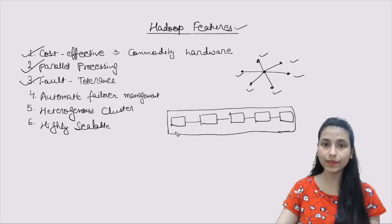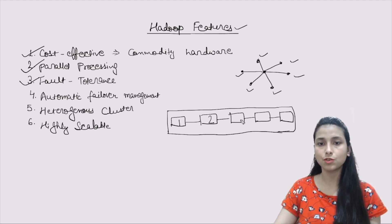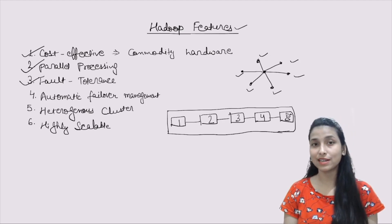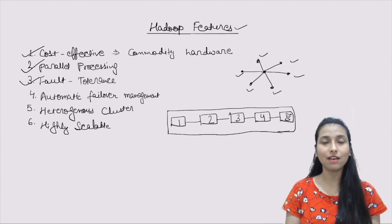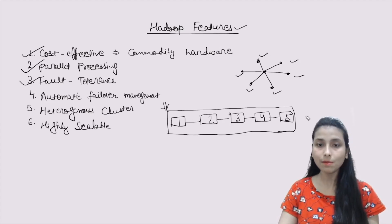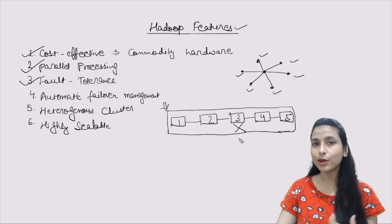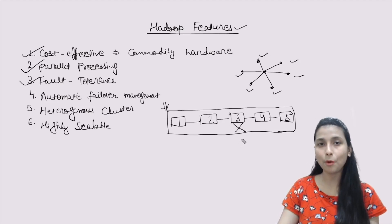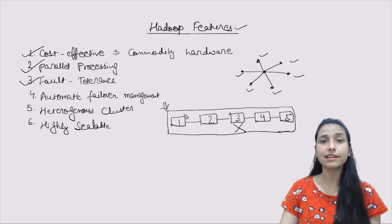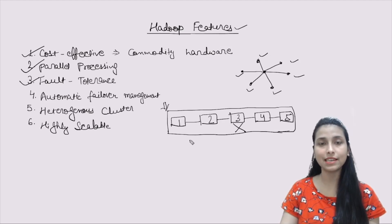In a single cluster there are multiple nodes or machines. Let's say there are blocks: block 1, block 2, block 3, block 4, and block 5. If data comes in, it gets split across all these blocks. Suppose this third node crashes — do you think the data will be lost? The answer is no, because when data is split across the cluster, it is also copied onto 3 systems. This is called the replication method.